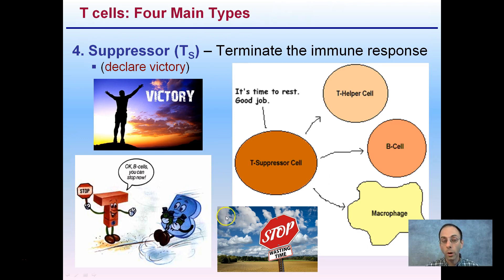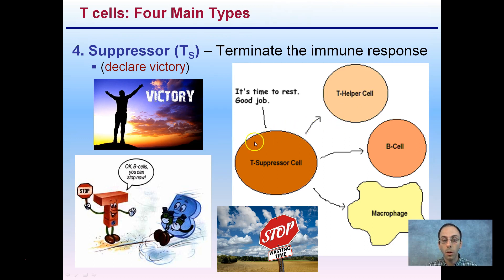This is a way to regulate or shut down the immune system. At times we do want these cells active in cleaning up our body and ridding it of potential invaders, but we also need a way to stop that so the body isn't wasting energy overproducing these cells. The T-suppressor cells are responsible for that.